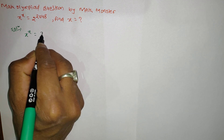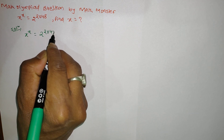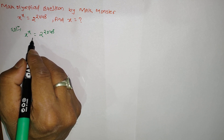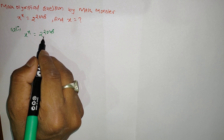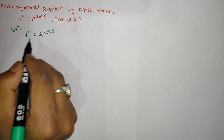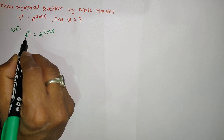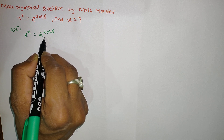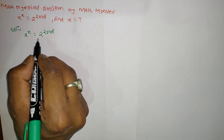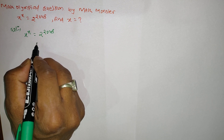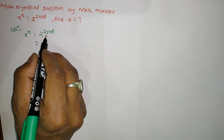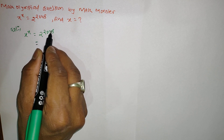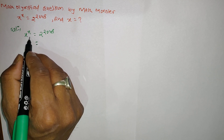Here we can see that x^x equals 2^2048. In this type of question, we always have to make the left-hand side and right-hand side the same form. For that, we have to change either the left-hand side or the right-hand side. Here we can manipulate the term 2^2048 to match the form of the left-hand side.